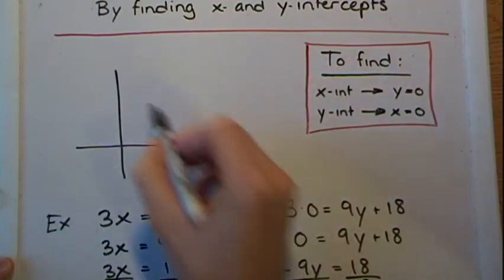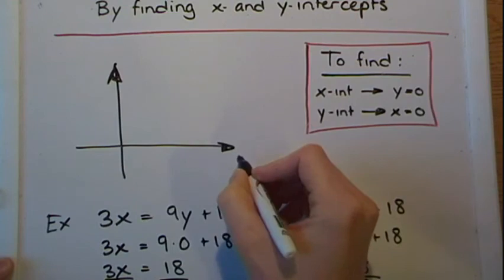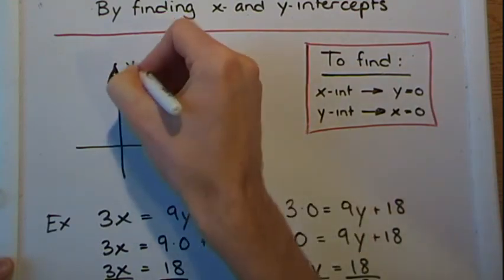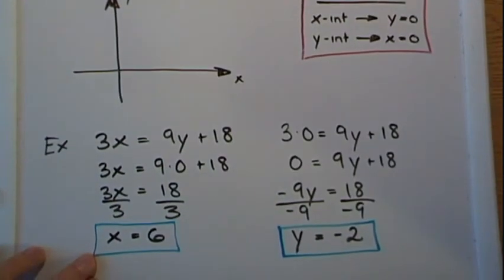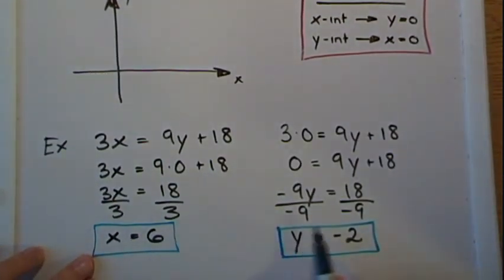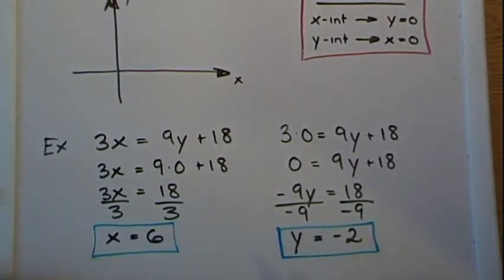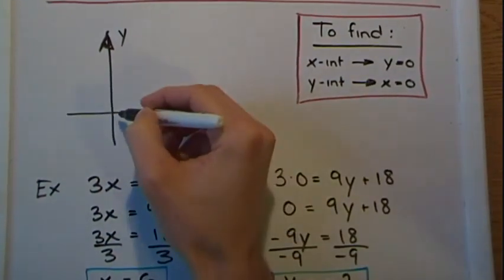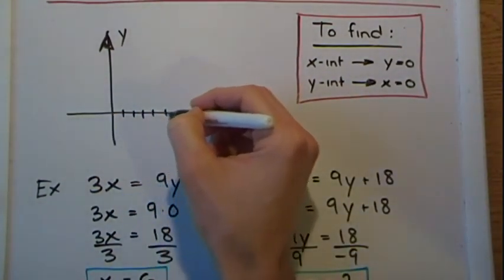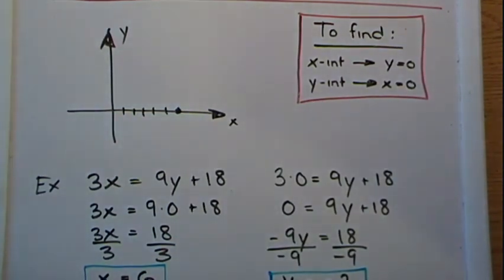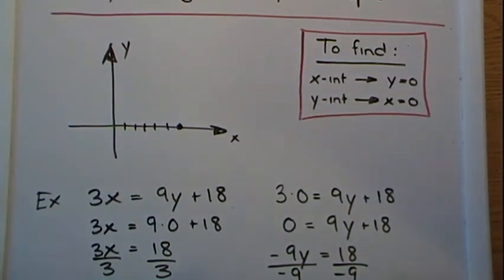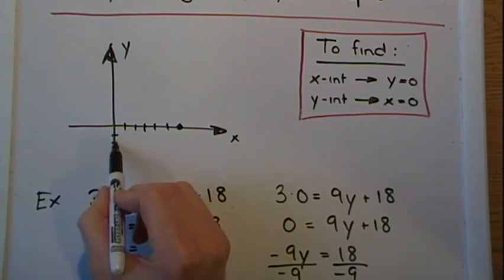So the only thing we do now is to plug these points out and then connect the dots. So x equals 6 and y equals negative 2. So x equals 6 is going to be right here. And y equals negative 2 is going to be right here.